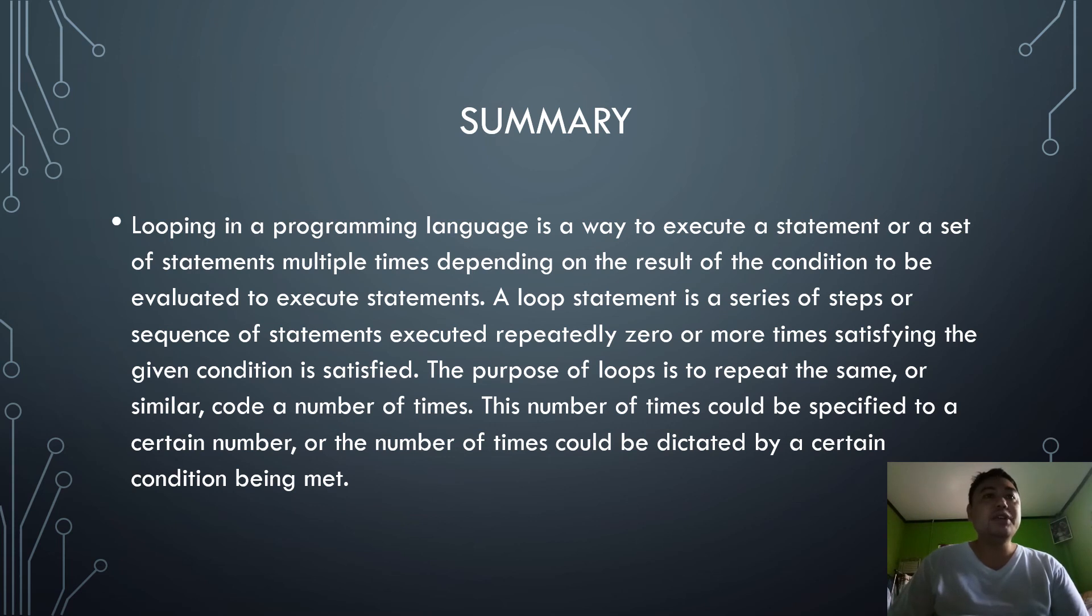In summary, looping in a programming language is a way to execute a statement or a set of statements multiple times, depending on the result of the condition to be evaluated to execute statements. Remember that a looping statement is a series of steps or sequence of statements executed repeatedly zero or more times, satisfying the given condition. The purpose of the loop is to repeat the same or similar code a number of times. This number of times could be specified to a certain number, or the number of times could be dictated by a certain condition being met. Remember that if the condition is met, then the program is executed right away.